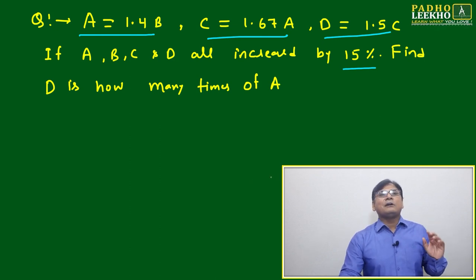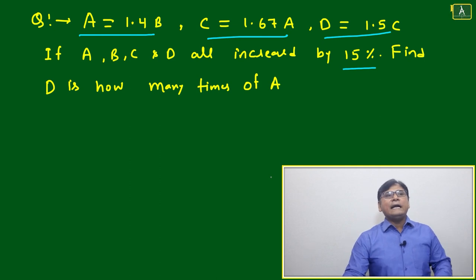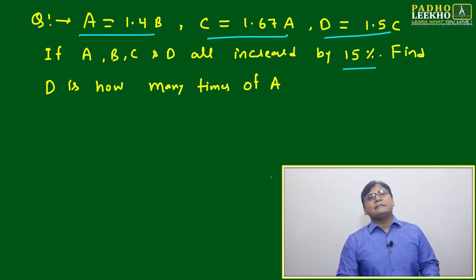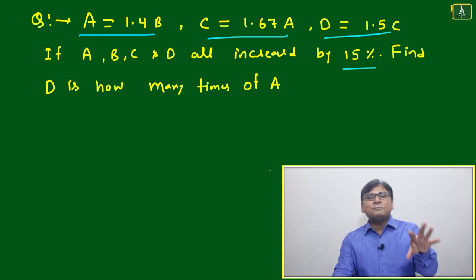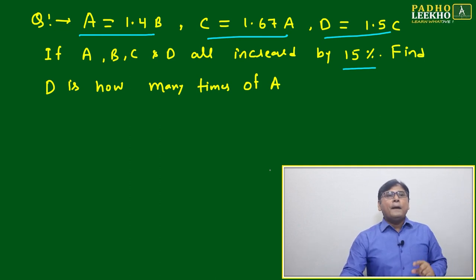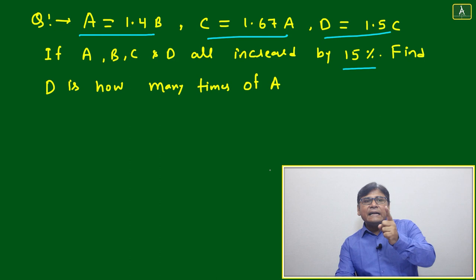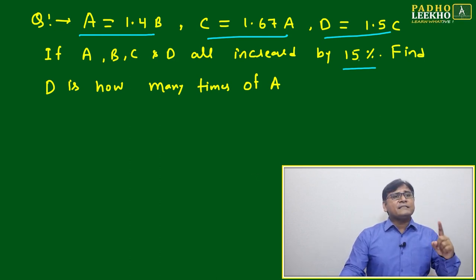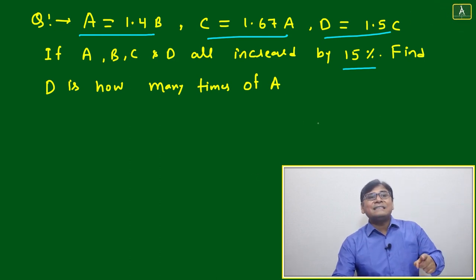If all are increased by 15 percent, then what will happen? If you are comparing a and b, then the 15 percent on both sides will cancel out. Similarly, 15 percent will be canceled out on both sides. But if you are comparing a and d, then we are not sure it will exactly cancel out — we have to check because other changes are involved.